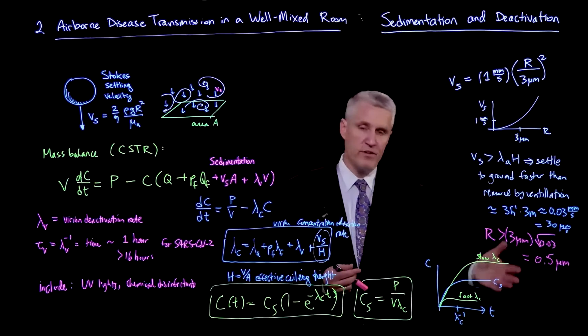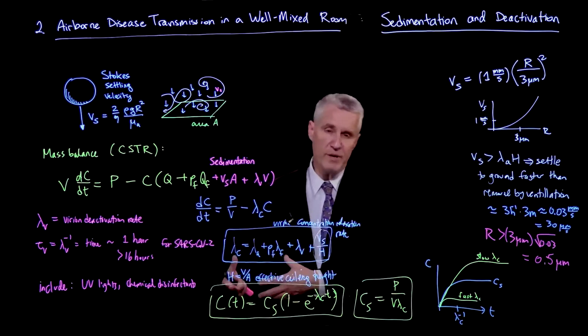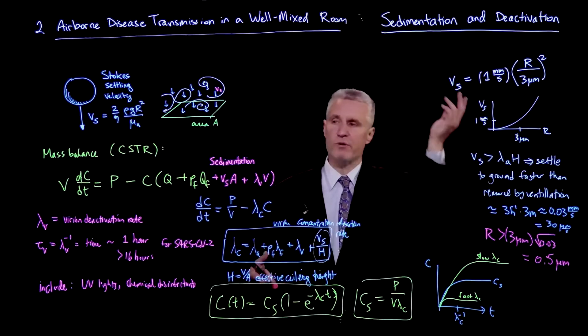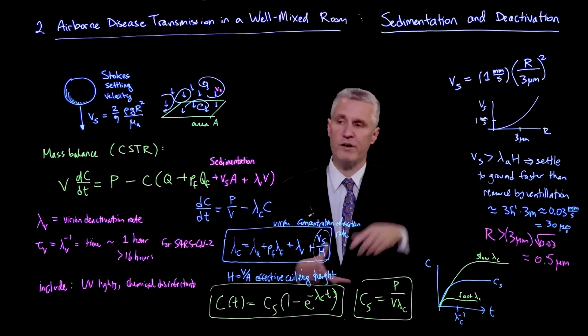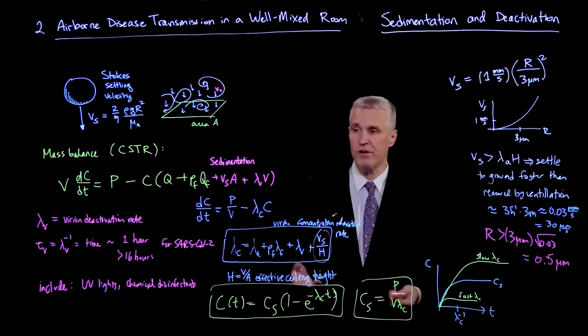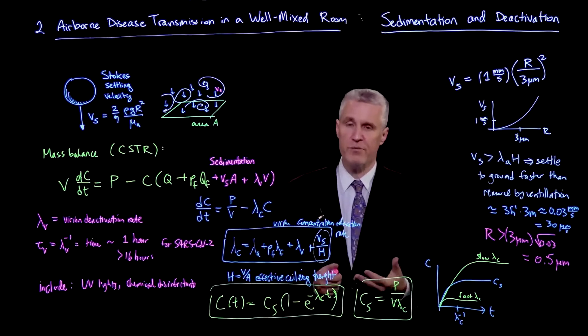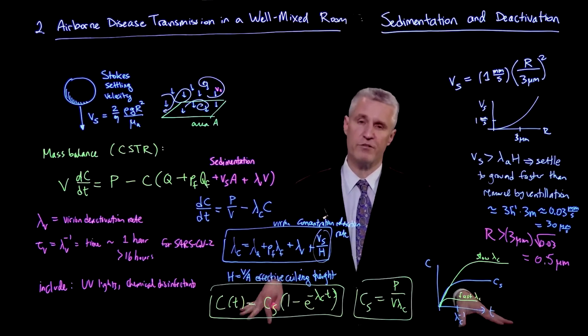So basically, at this ventilation rate, the particles that fall to the ground faster than they're removed by ventilation are those that are larger than 0.5 micron radius or 1 micron diameter. So this is telling us that the submicron particles are truly aerosols and that they're really not going to make it to the ground before they even get swept away by the ventilation. And the rest of the time, they're all just floating around.